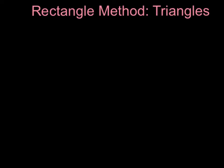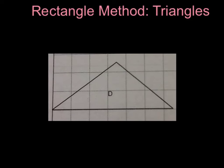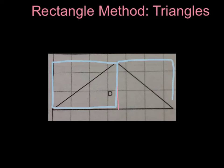Before we talk about using formulas to find the area for triangles, let's review the rectangle method that we learned about yesterday. First, I need to split this triangle into two right triangles, because looking at it, I can see that is a possibility. Next, I'm going to draw in the two rectangles that I will use to find the area. After that, I am going to calculate the area of each separate rectangle.